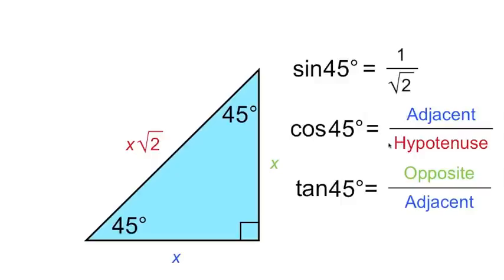Cosine is adjacent over hypotenuse, so that's again x over x root 2. The x's cancel again, so the cosine of 45 degrees, like the sine of 45 degrees, is 1 over root 2.